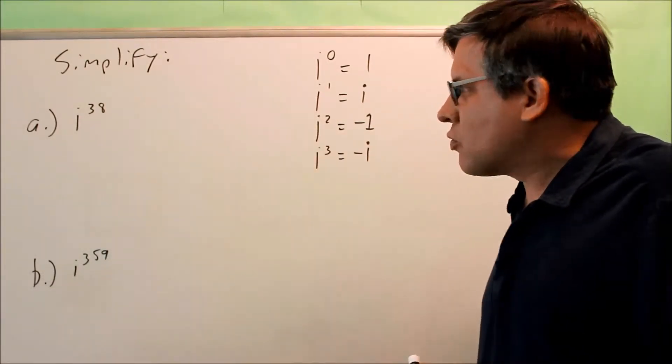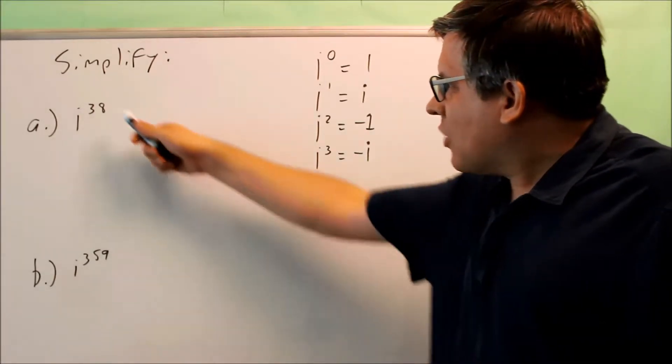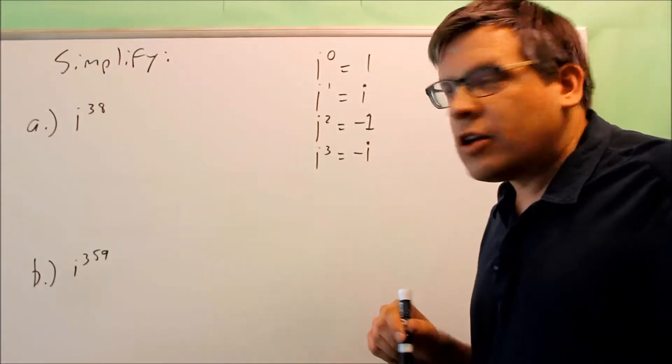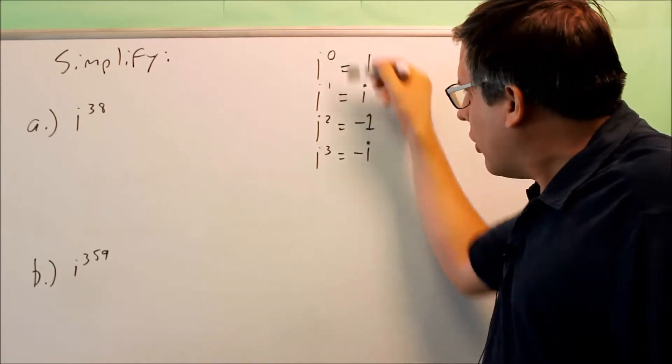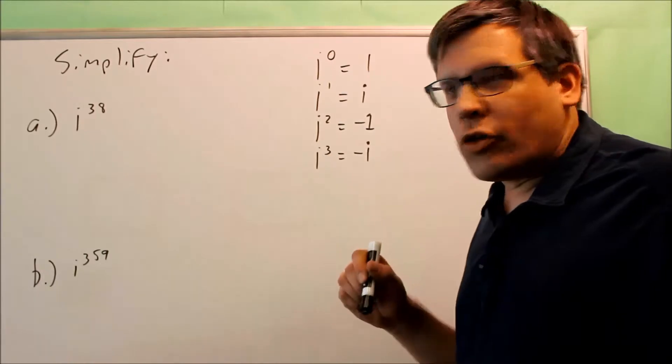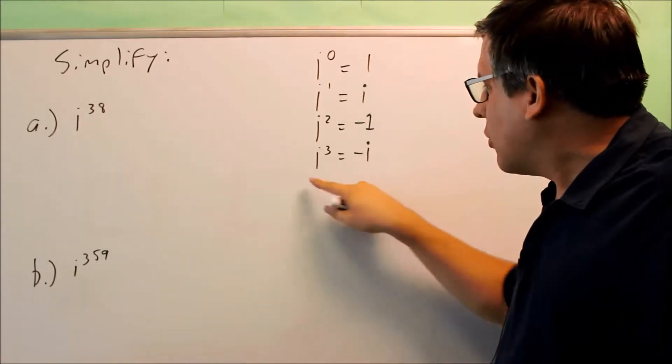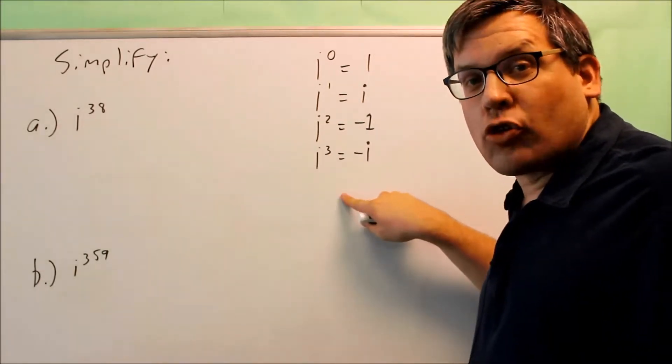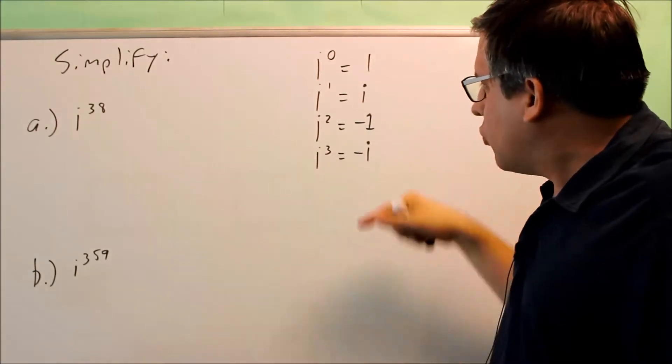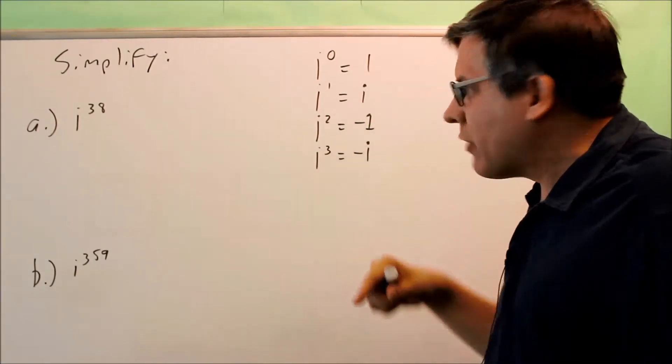So when you have a problem like this, what you want to do is take whatever the power is, you're going to divide it by 4. And whatever remainder you get, it's going to end up being one of the numbers in this list, and you can use that to simplify it. We're dividing by 4 because if we were to continue this pattern and go to i to the fourth power, you would get back to 1 again and the whole pattern would repeat. So the whole pattern keeps going every 4 times.